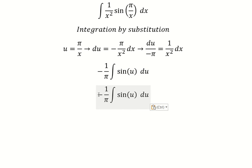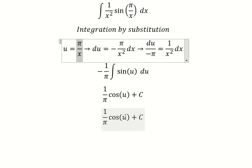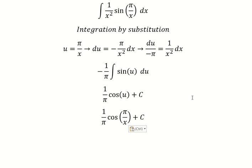So the integral of negative sine u gives us cosine u. Substituting back, we get the final answer. This is the end, thank you for watching.